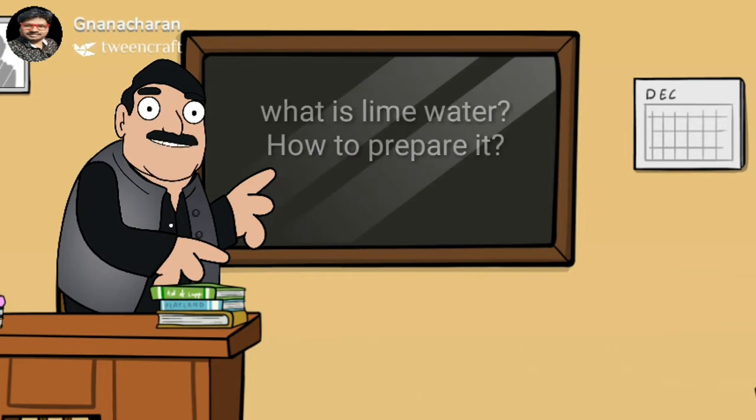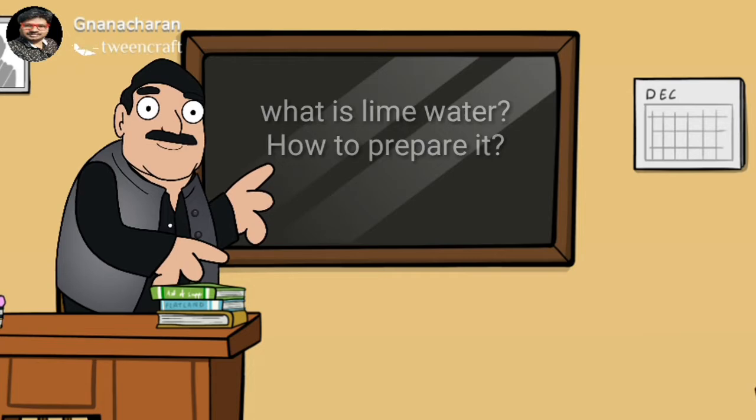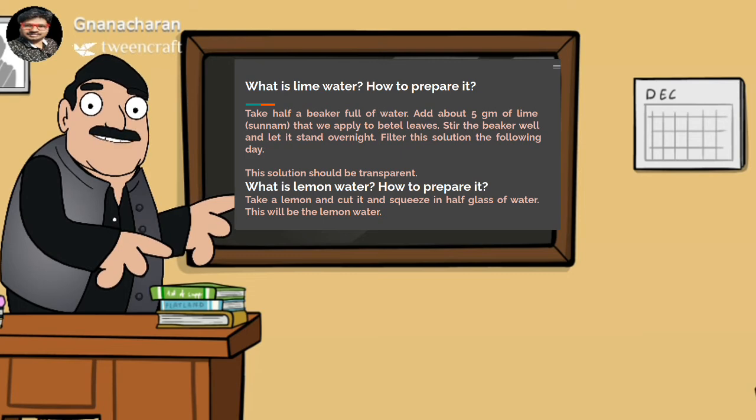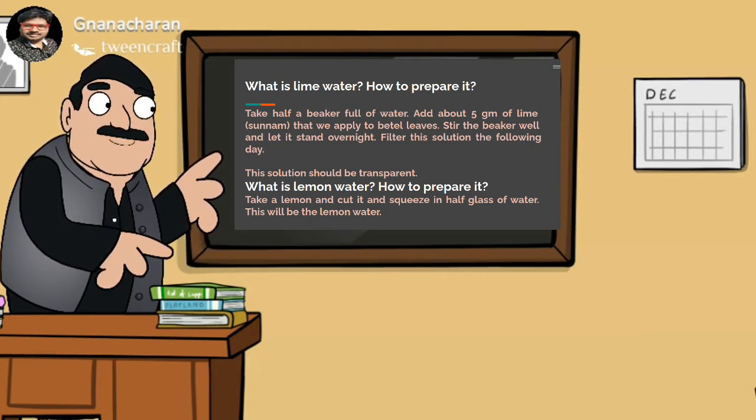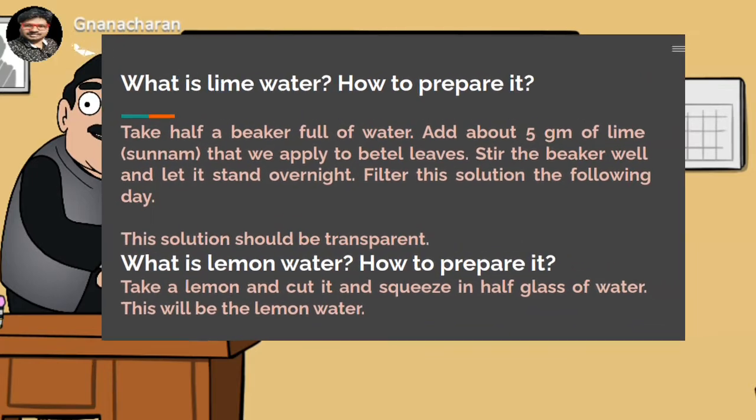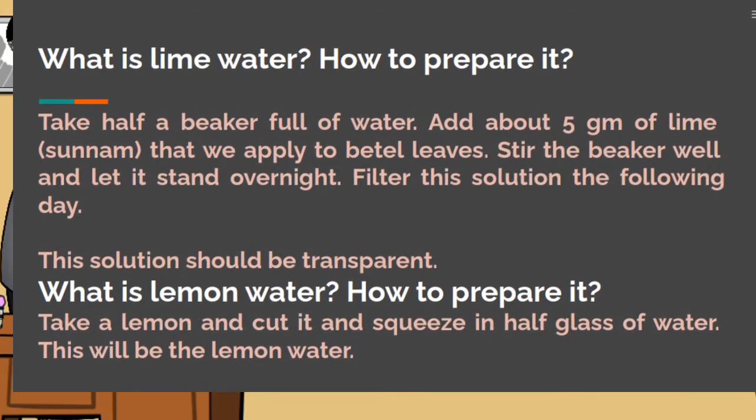Now let us talk about what is lime water and how to prepare it. What do we call lime in our local language? That's right, Sunnam. The lime we have to collect is usually applied to beetle leaves. You might have seen some people chewing beetle leaves using lime. That lime you have to collect. After you add that lime to water, stir it well and let it stand overnight. Filter the solution the following day. After you filter, you get filtrate. That filtrate is nothing but lime water that looks transparent.